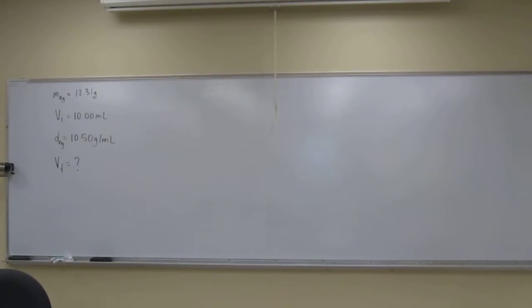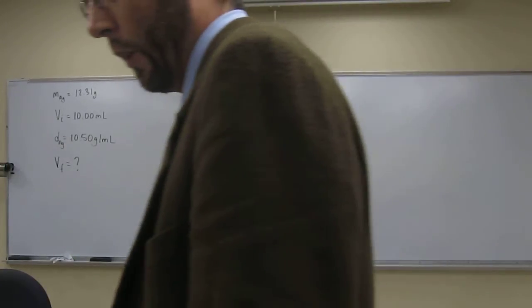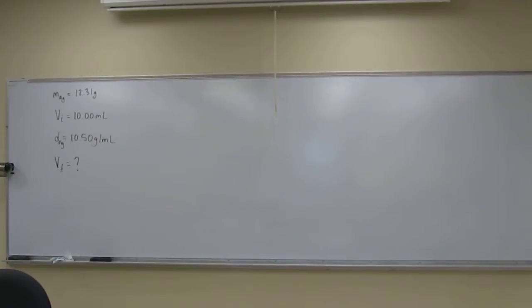Okay, so let's do one of these density problems. This one says a piece of silver with a total mass of 12.31 grams was placed in a graduated cylinder filled with 10.00 mils of water. The density of silver is 10.50 grams per mil.